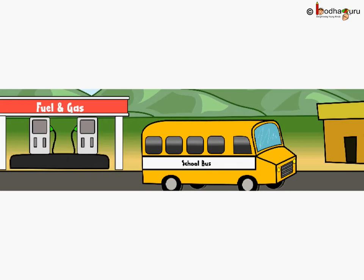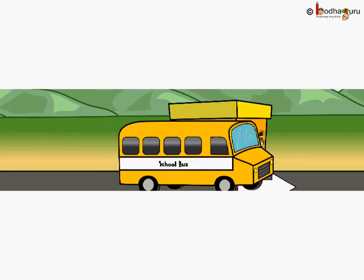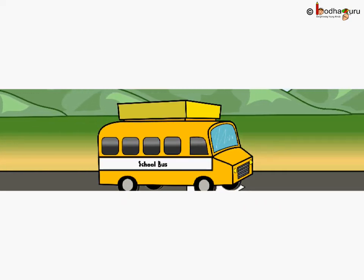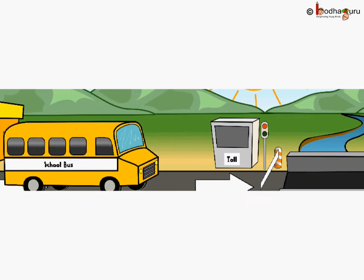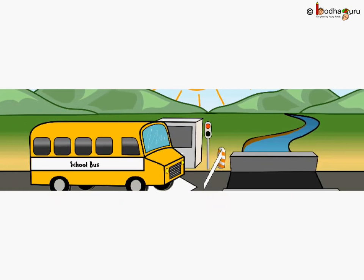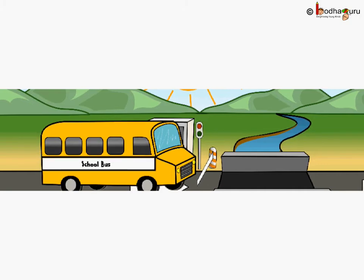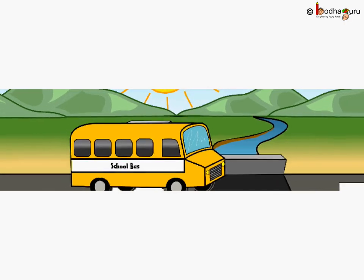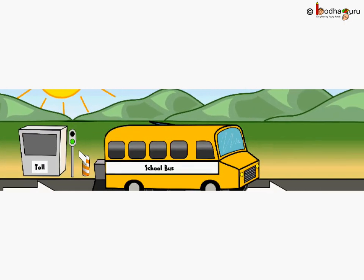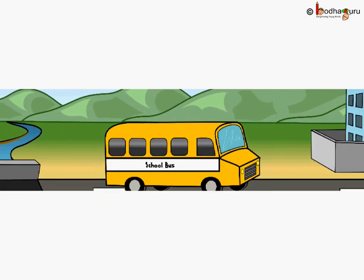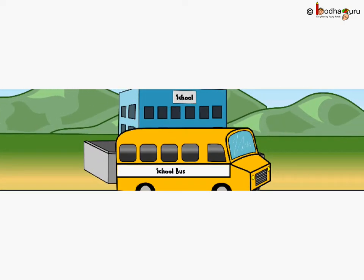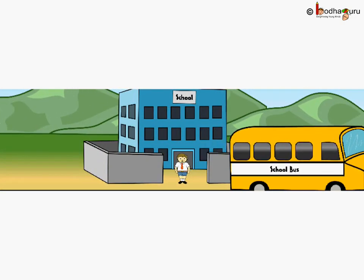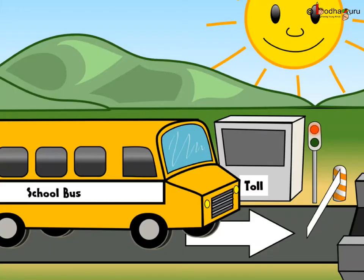Let us say Aman goes to a school which is on the other side of the river. So, to go to school, he has to board the school bus. He boards the school bus from a stop near his house. The school bus uses the one-way bridge to cross the river and reach the school. Can the bus cross the river any time? No.